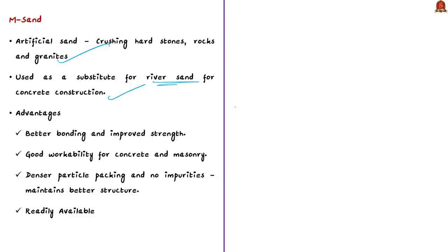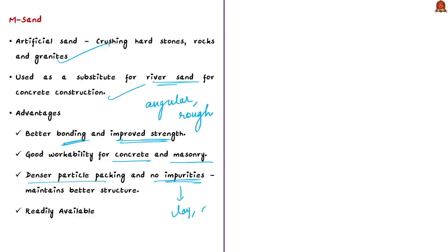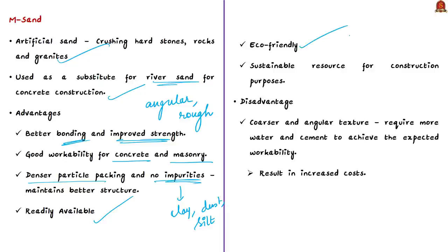M-Sand particles are angular with a rougher surface texture, enabling better bonding and improved strength. Compared to natural sand, M-Sand has higher fineness, giving good workability for concrete and masonry. It also has denser particle packing and is free from impurities like clay, dust, and silt — helping maintain a better structure. It is readily available, eco-friendly, and a sustainable resource for construction. However, its coarser and angular texture can require more water and cement to achieve expected workability, resulting in increased construction costs.